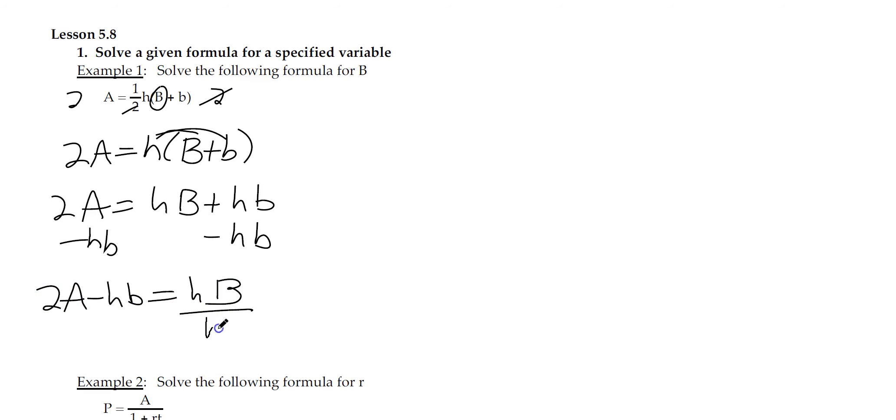So we now have 2A minus h little b equals h big B. Now we divide by the h, the whole thing on the other side by the h, so we can be left with big B equals 2A, capital A, minus h little b over little h.